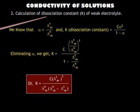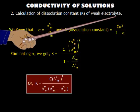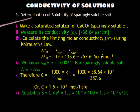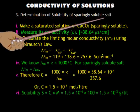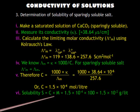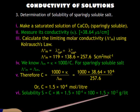Application 2: Calculation of the dissociation constant of weak electrolytes. The dissociation constant is measured by substituting the degree of dissociation alpha as shown. Application 3: Determination of solubility of a sparingly soluble salt. Make a saturated solution of the sparingly soluble salt, measure its conductivity, and calculate the limiting molar conductivity from Kohlrausch's law. Then get the molarity from the formula, multiply by molecular weight, and obtain solubility in grams per liter.